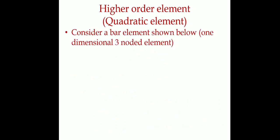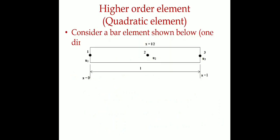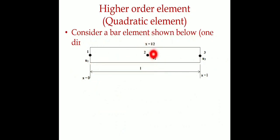Now I will take a three-node bar element. If we have three nodes: the first node is at x = 0, the second node is at the midpoint x = L/2, and the third node is at x = L. This gives us a higher-order quadratic element.